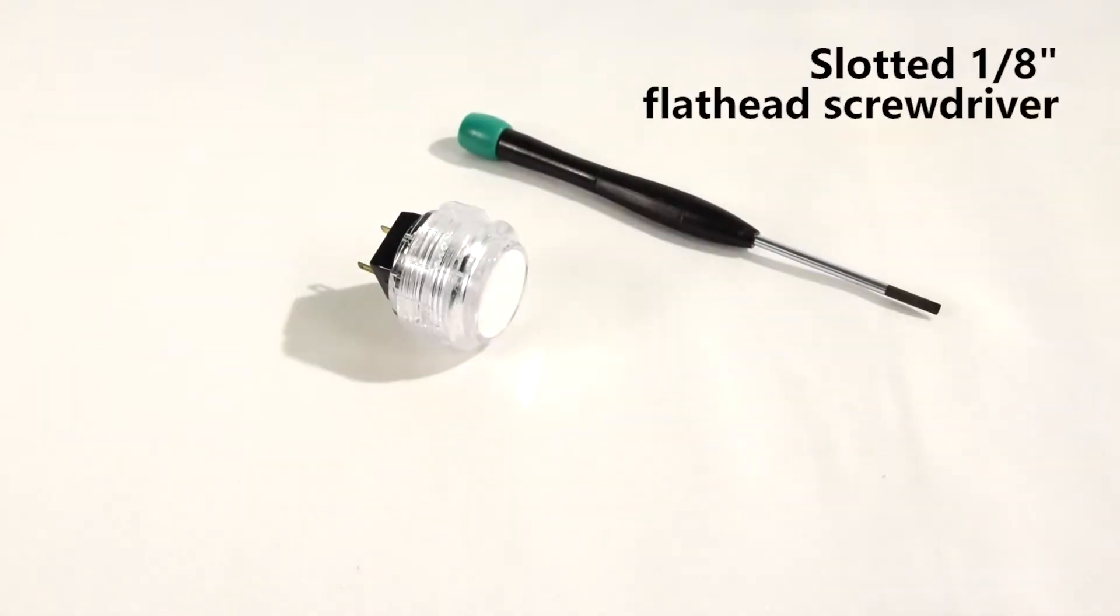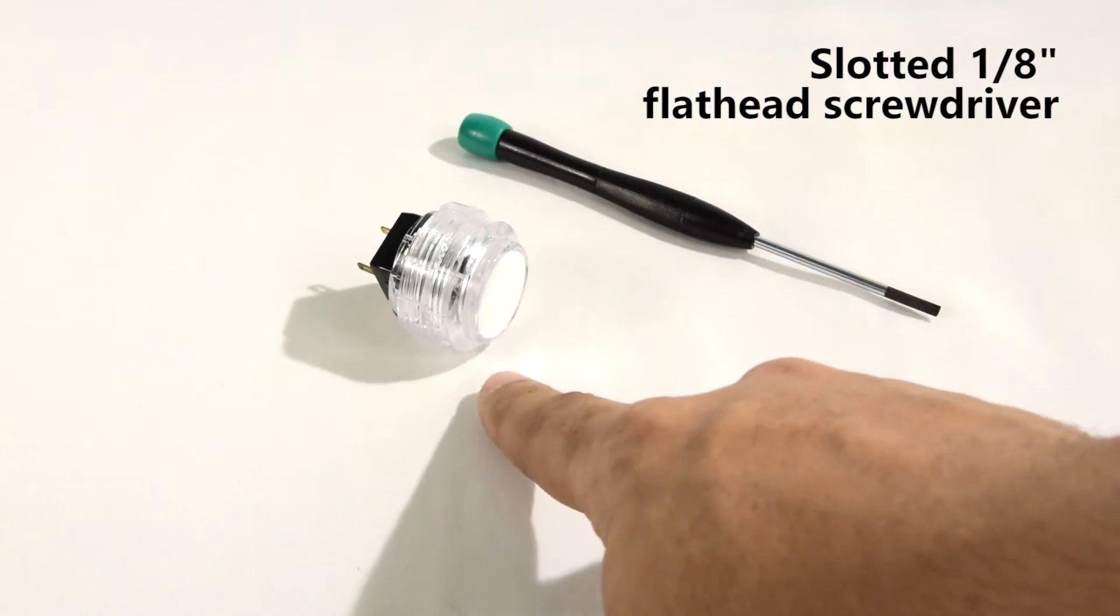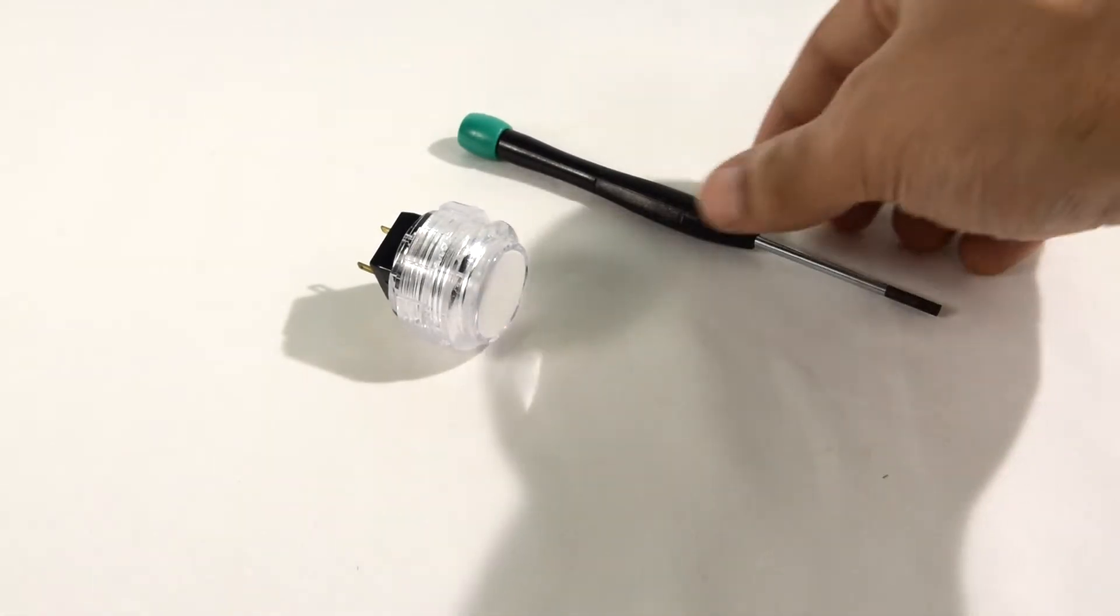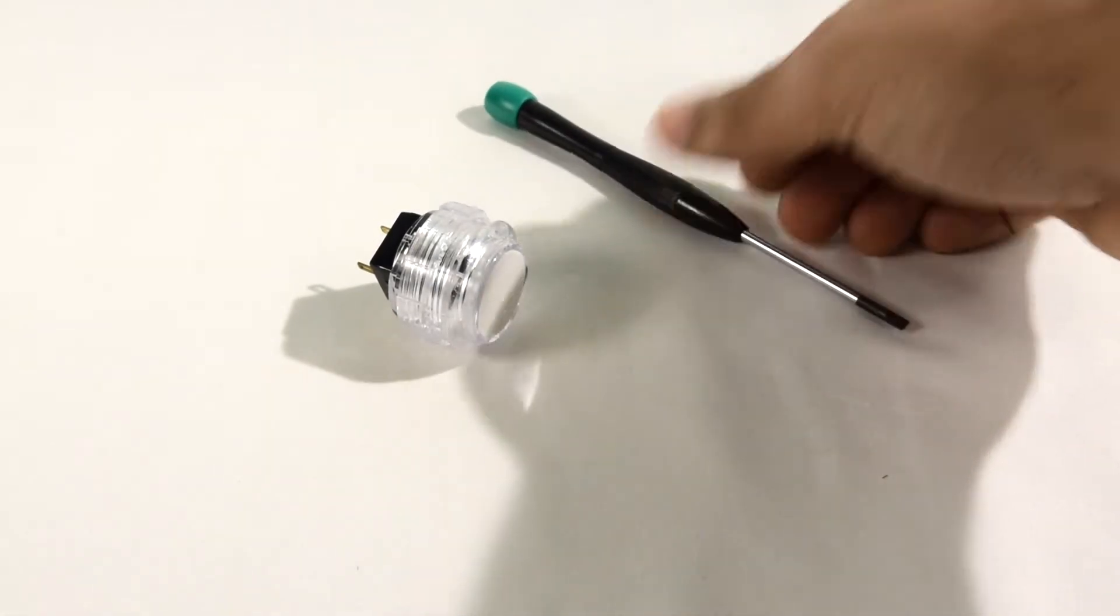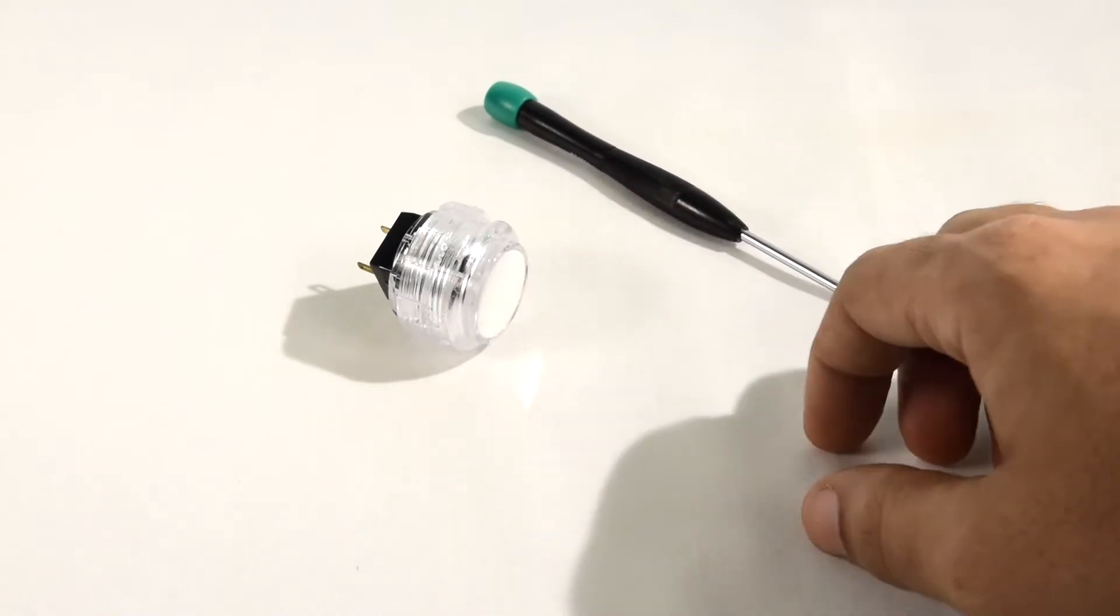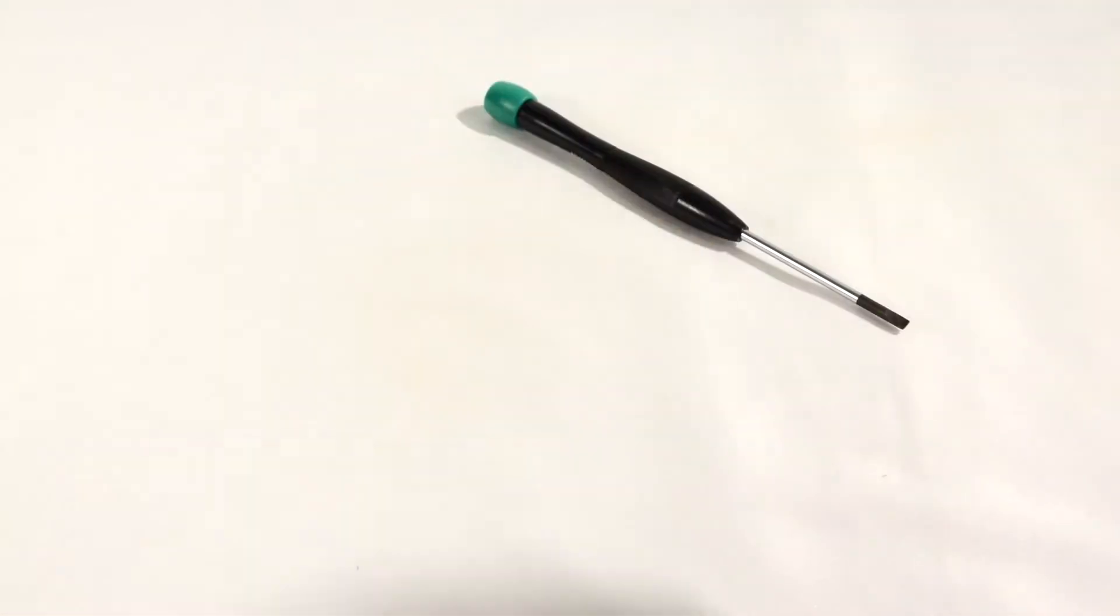I prefer to use a small flathead screwdriver for this task. It makes manipulating the locking tabs for the switch base and button plunger a little easier. Go ahead and have the screwdriver ready, but keep it aside for the time being. We only need the push button for the first step.